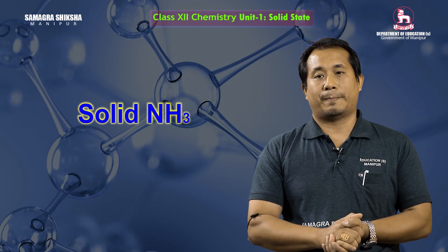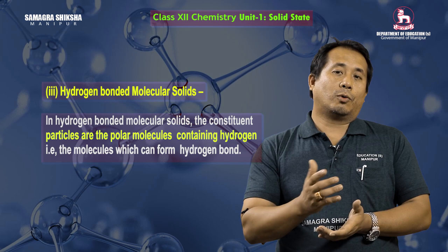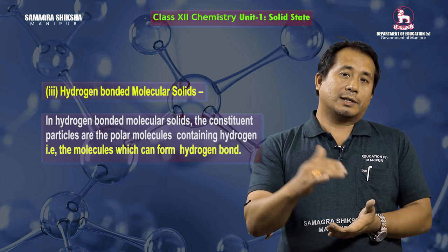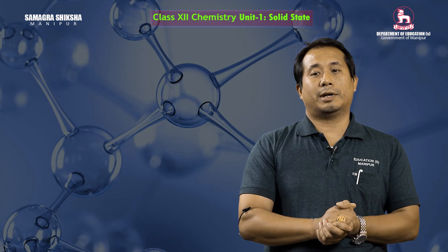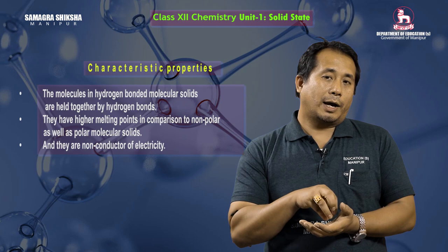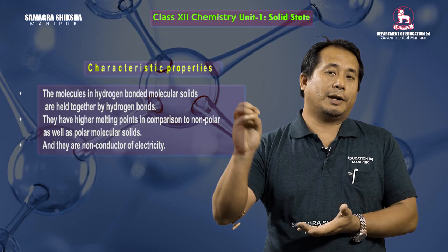In hydrogen-bonded molecular solids, the constituent particles are polar molecules containing hydrogen — that is, molecules which can form hydrogen bonds. As the name implies, the constituent particles are held together by hydrogen bonds. An example is the crystal of ice.